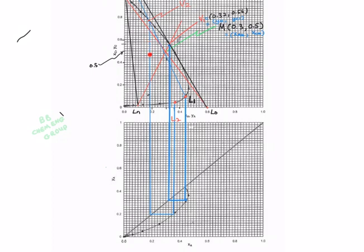From V2 we can get L2. All the L's must be placed on this particular raffinate layer, and all the V's will be on the extract layer.